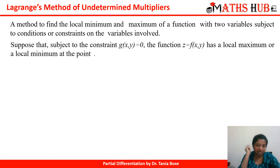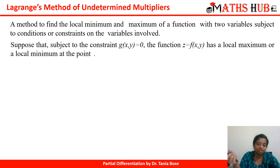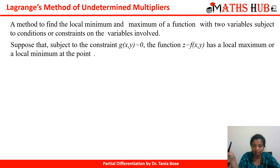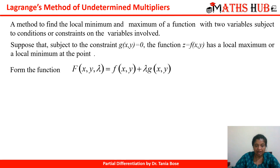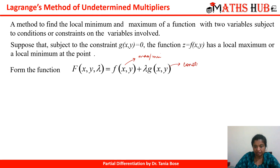This method is used to find the local minima and maximum of a function with two variables subjected to some constraints or conditions on the variables involved. Suppose the constraint is g(x, y) = 0. The function z = f(x, y) has a local maxima or minima at a given point. We form the function F = f + λg, where f is the function to be maximized or minimized, and g is the constraint on the variables.